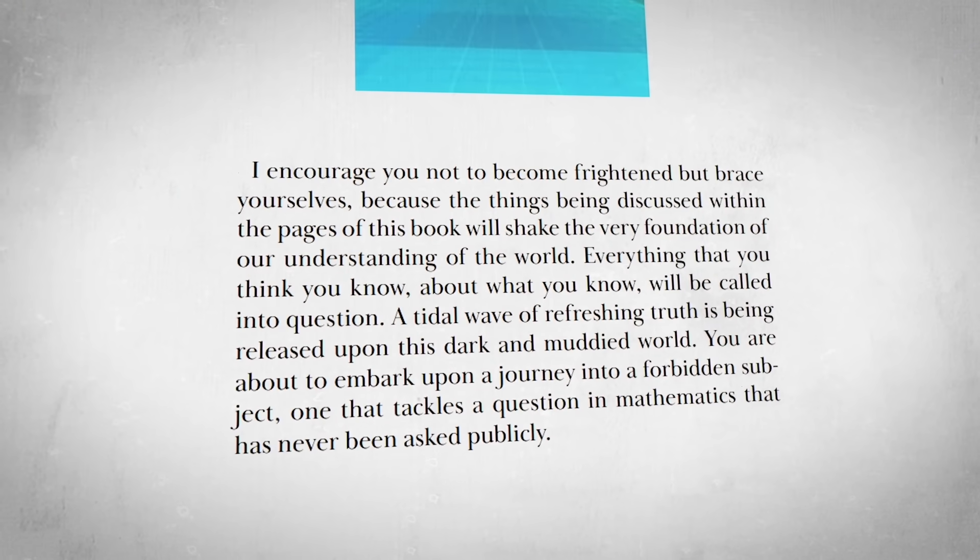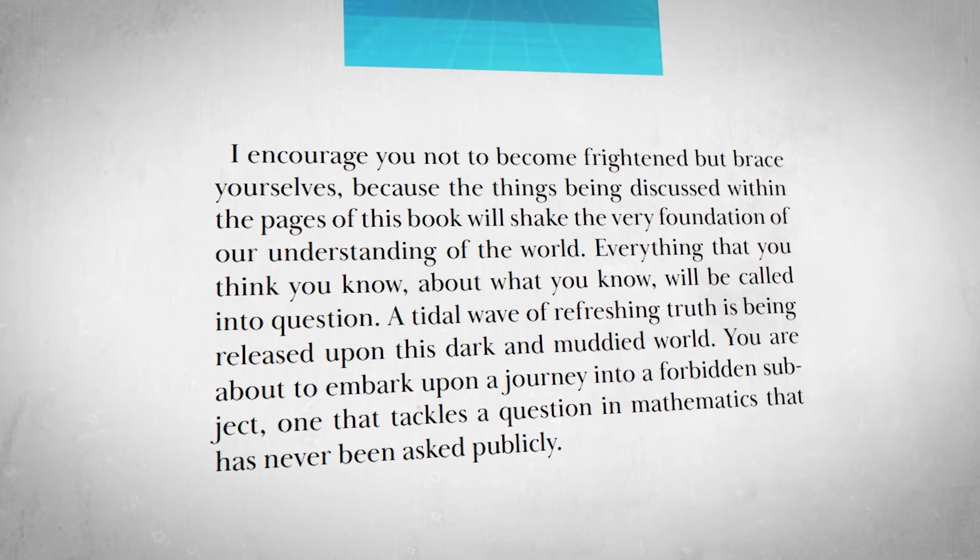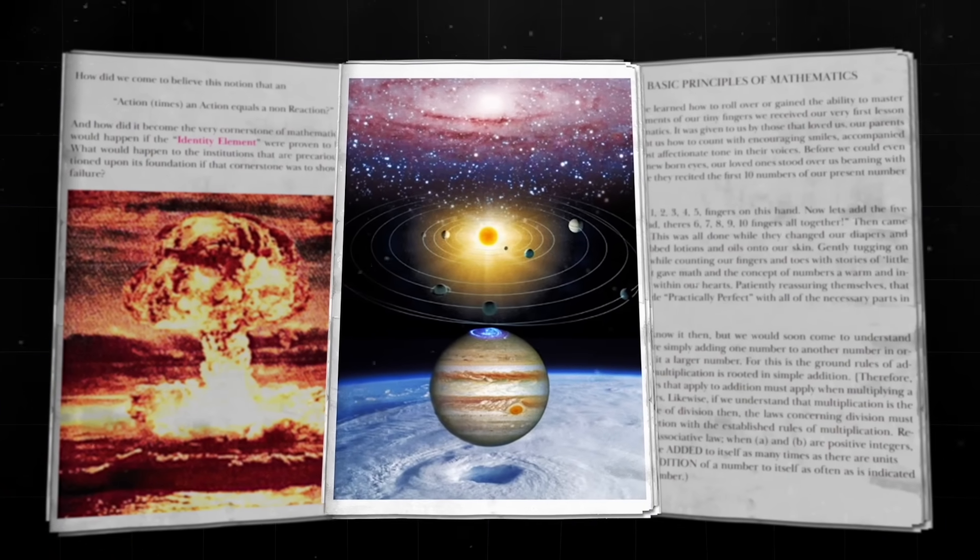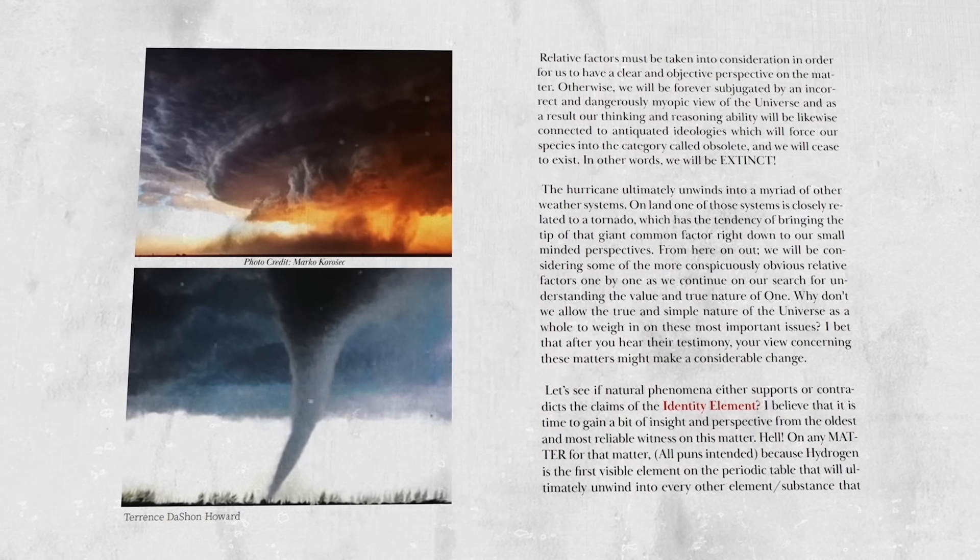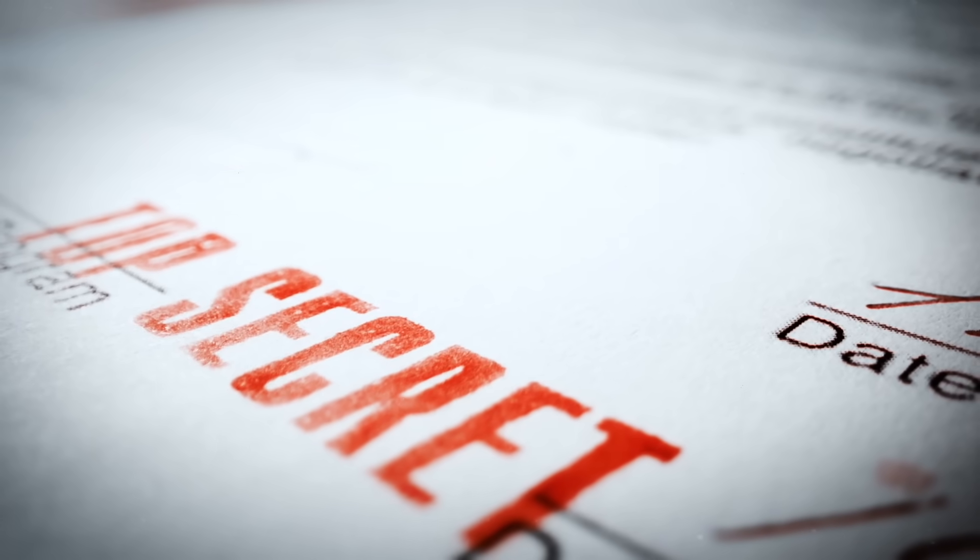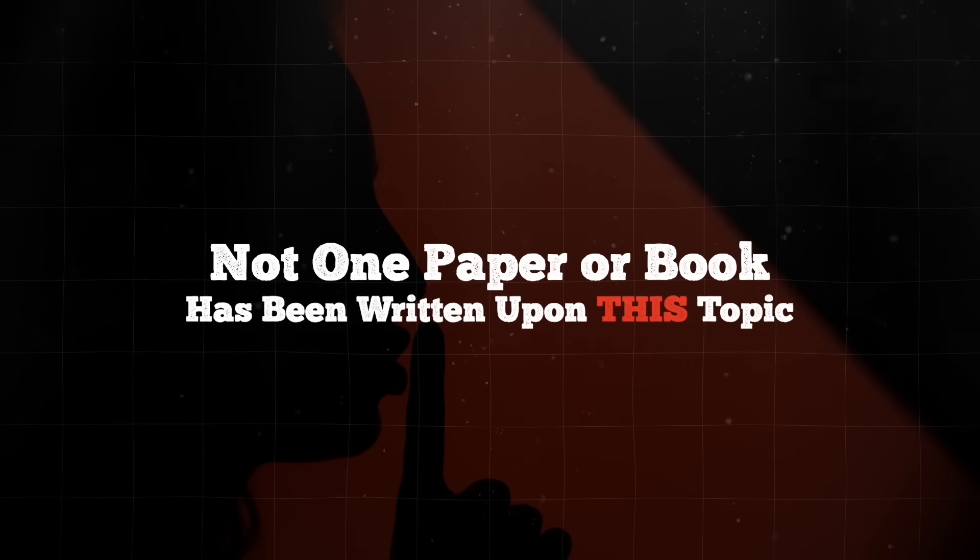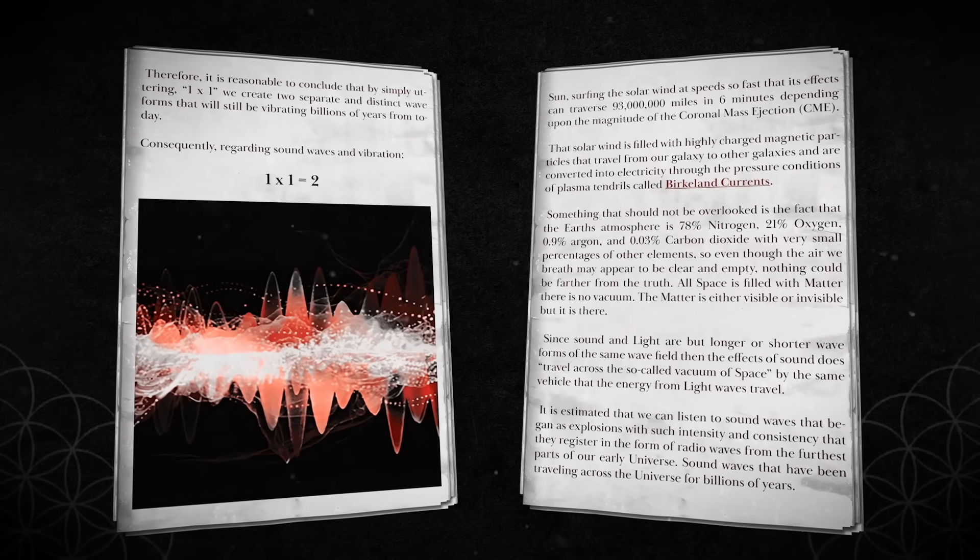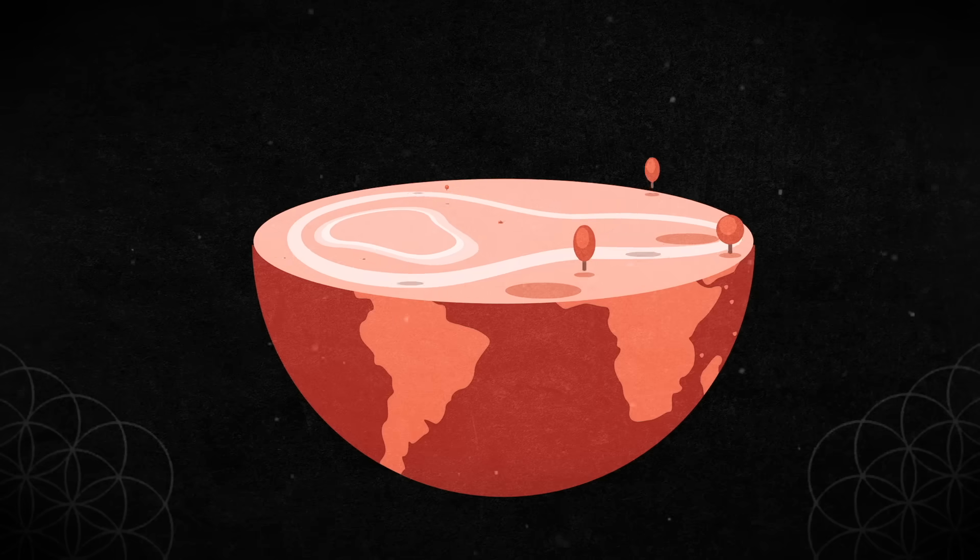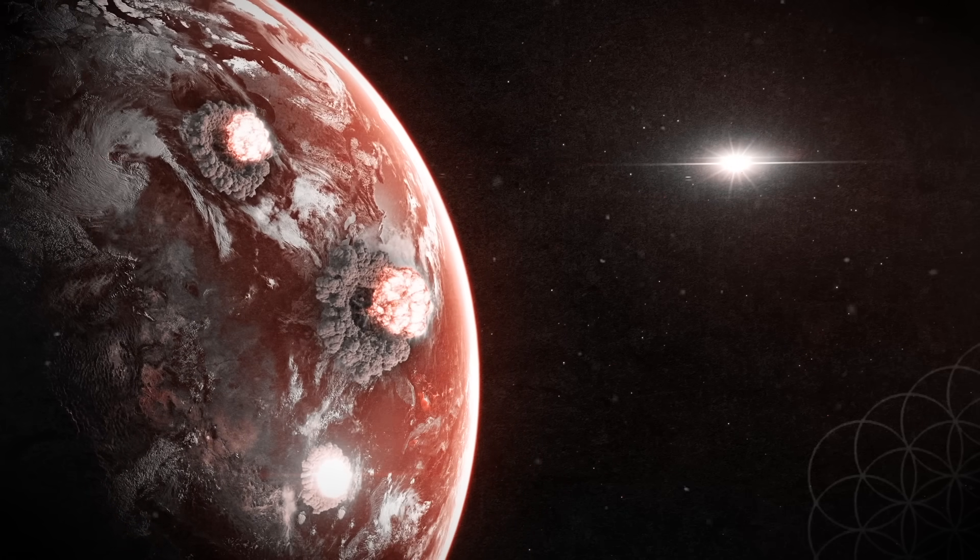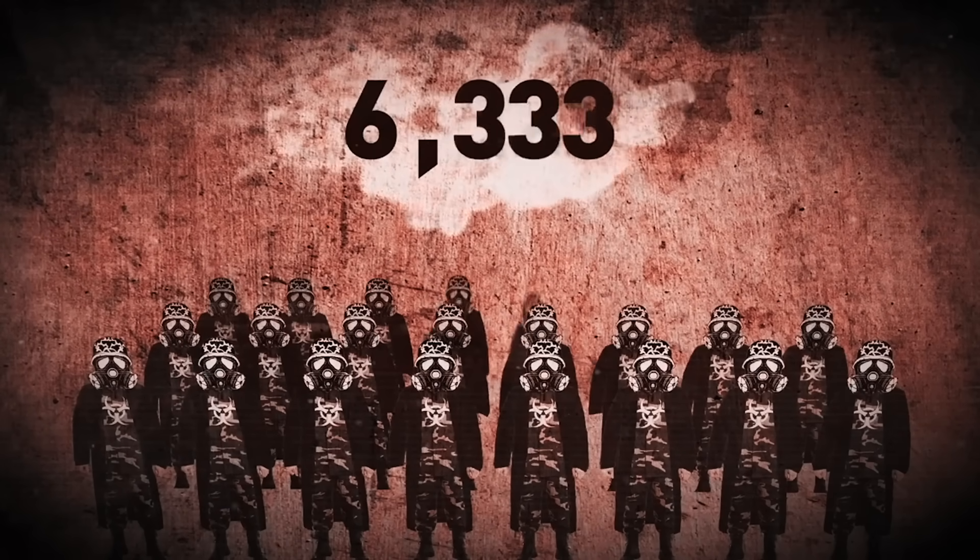We will start by reading a few words from Terrence Howard left in the book as a cautionary note. I encourage you not to become frightened, but brace yourselves because the things being discussed within the pages of this book will shake the very foundation of our understanding of the world. Everything that you think you know will be called into question. You are about to embark upon a journey into a forbidden subject, one that tackles a question in mathematics that has never been asked publicly. If the information in this book is heeded, then this species called mankind will have the keys necessary for an eternally sustainable existence. If not, this species will suffer extinction. Our species will pass away and be remembered only for our ignorance.